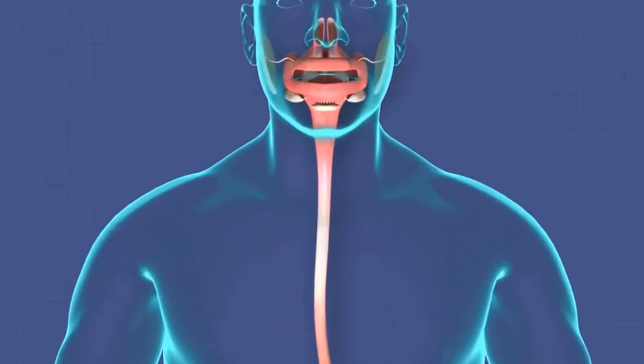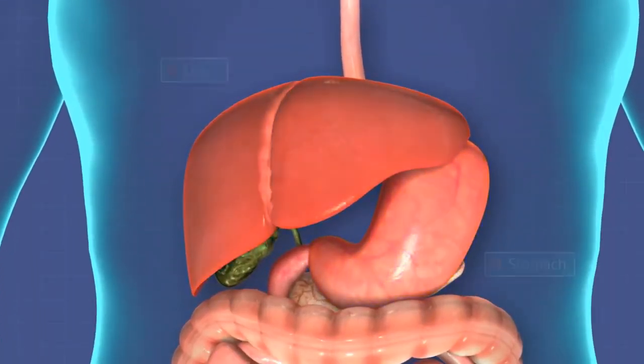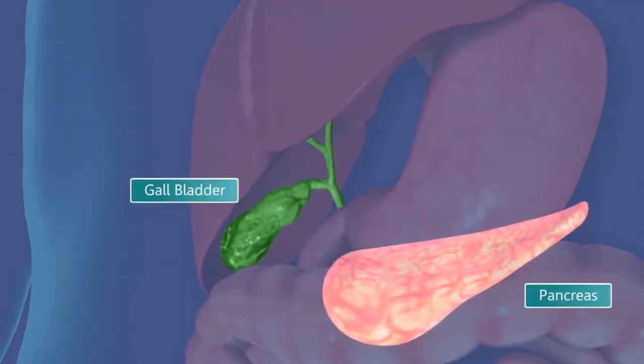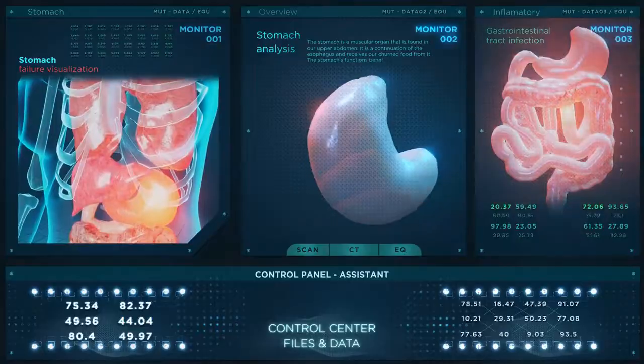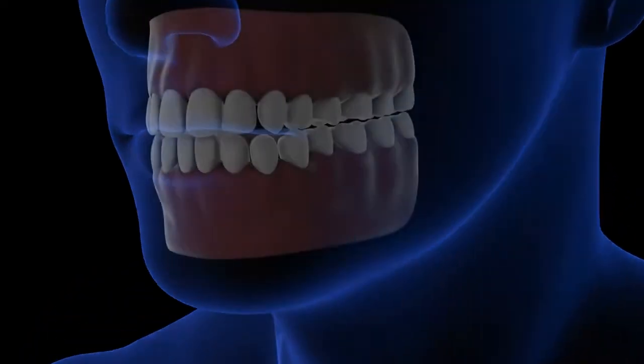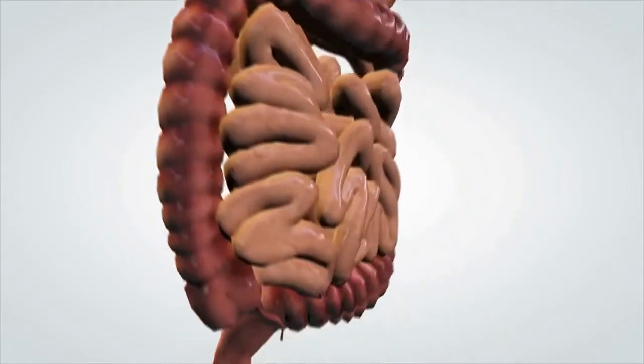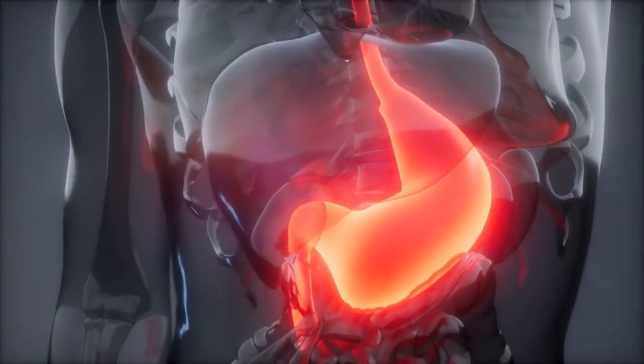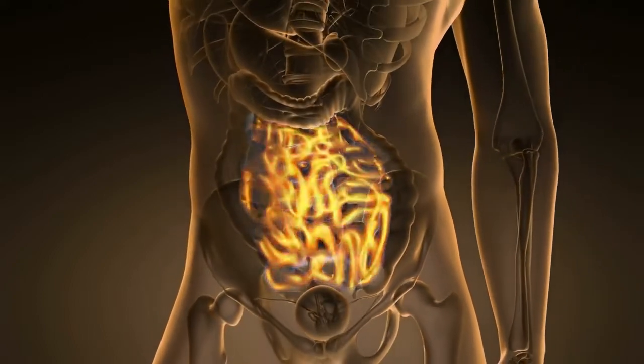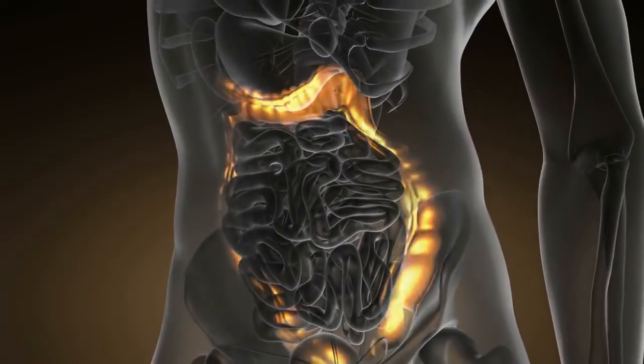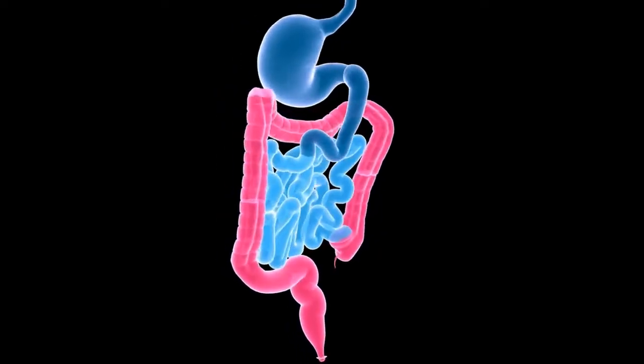Moving on to the digestive system, which is responsible for breaking down food and extracting nutrients from it. The digestive system includes organs like the mouth, esophagus, stomach, small intestine, and large intestine. Each organ plays a critical role in the digestion and absorption of nutrients from the food we eat.